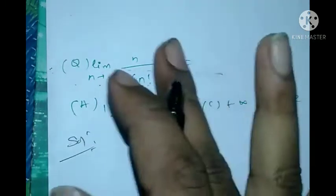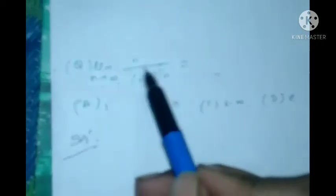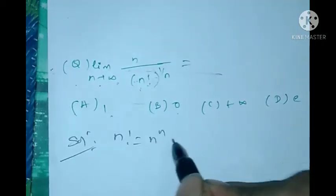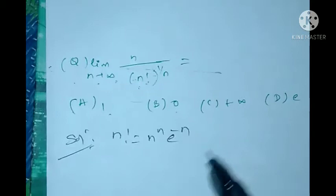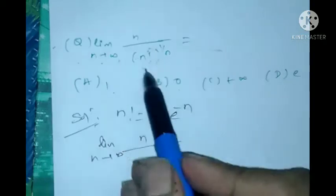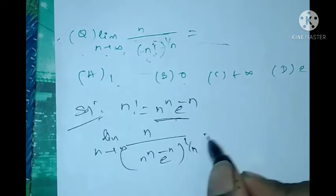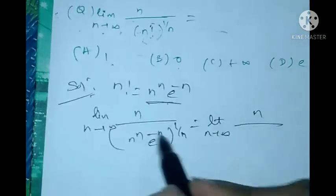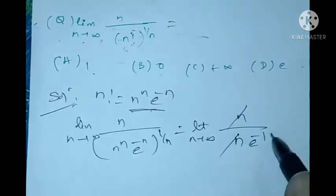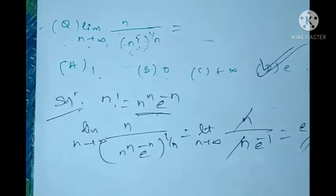I give the trick to solve these kinds of problems. When you see n factorial in a limit problem, we substitute the direct result: n! = n^n · e^(−n). Apply this result. In place of n!, substitute n^n · e^(−n), whole power of 1/n. This equals the limit as n tends to infinity of n/n — the n's cancel — and e goes to the numerator, so we get e as the answer. Therefore the correct option is D.